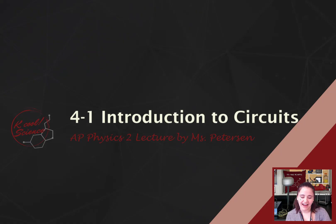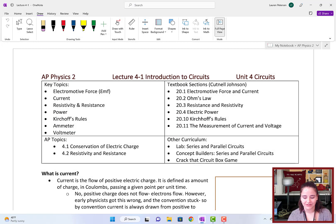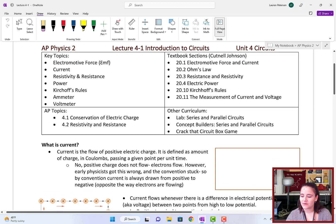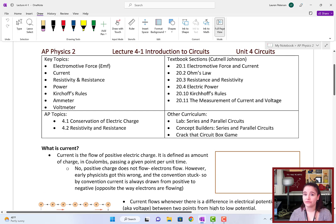Hey guys, Ms. Peterson here, and welcome to AP Physics 2, Lecture 4-1, all about circuits. Today we're going to be talking about electromotive force and current and resistivity and power, and really going through an overview of everything we're going to be learning in this unit. This is our foundational lecture that's going to give us the vocabulary and some of the tools that we use to analyze circuits, and then most of the learning of this unit will be done through labs.